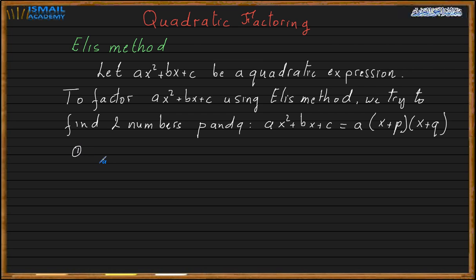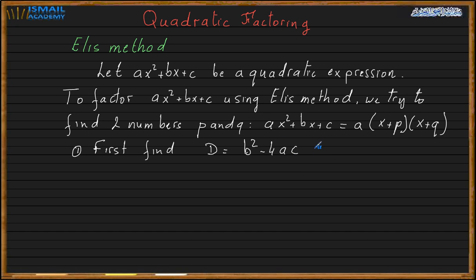The first step is to find the discriminant D, which is b² − 4ac. If it's positive, that's great. If you want to use complex numbers, it still works even if D is not positive. But if you want real numbers, D must be greater than or equal to zero. That's the first step: find the discriminant.